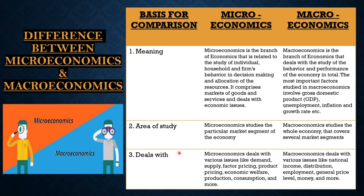The third base is what each deals with. Microeconomics deals with various issues related to demand, supply, factor pricing, product pricing, economic welfare, production, consumption, and many more. On the other hand, macroeconomics deals with various issues like national income, distribution, employment, general price level, money, and many more.